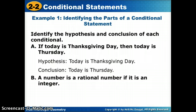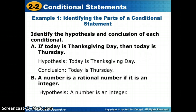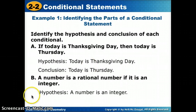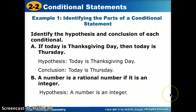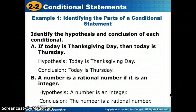'A number is a rational number if it is an integer.' What comes after the word 'if' is our hypothesis. Even though the sentence says 'it,' we always want our hypothesis to have our subject in it, so the hypothesis is 'a number is an integer.' The conclusion is 'the number is a rational number.' So if it's an integer, my conclusion is that it must also be a rational number.